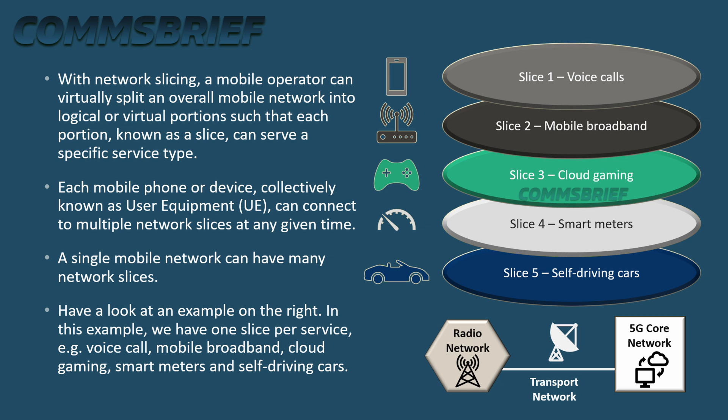Each mobile phone or device, collectively known as user equipment (UE), can connect to multiple network slices at any given time. A single mobile network can have many network slices. In this example, we have one slice per service — for example, voice call, mobile broadband, cloud gaming, smart meters, and self-driving cars.